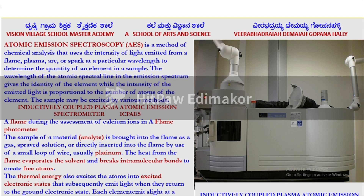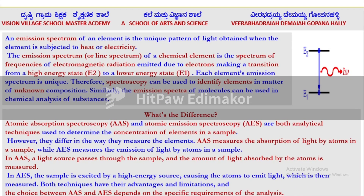Coming to the inductively coupled plasma atomic emission, which is a really sophisticated and recent instrumentation technology. In a flame photometer, the sample material is brought into the flame as a gas-sprayed solution, or directly inserted into the flame by using a small loop of wire, usually platinum. The thermal energy excites the atoms into excited electronic states, which subsequently emit light when they return to the ground state. An atom excites from the ground state to the excited state, and the difference between the two states can be measured with the help of sophisticated instrumentation technology using a data station.